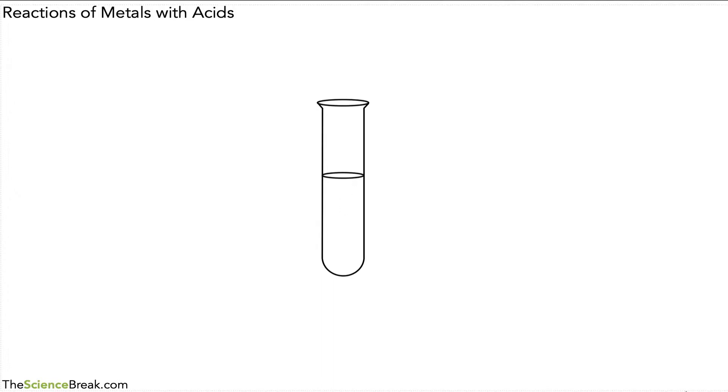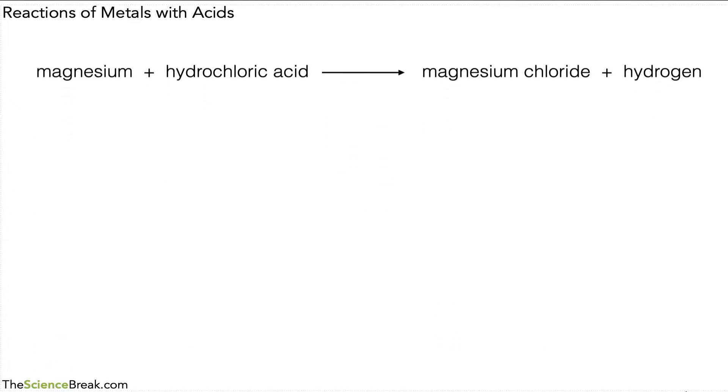We can write a word equation for this reaction. Magnesium plus hydrochloric acid gives magnesium chloride and hydrogen, which is a gas. Now we can write what's called a general equation to show what happens when any metal reacts with acid. So we've got metal plus acid gives salt and hydrogen.